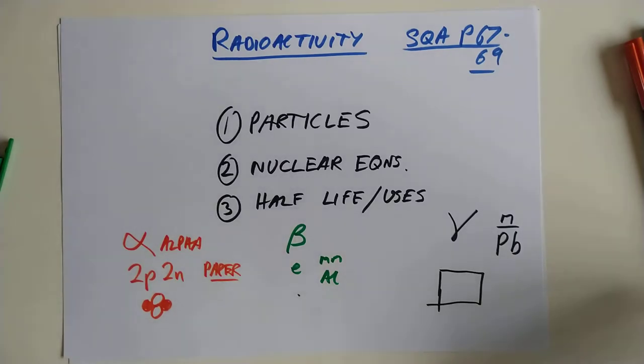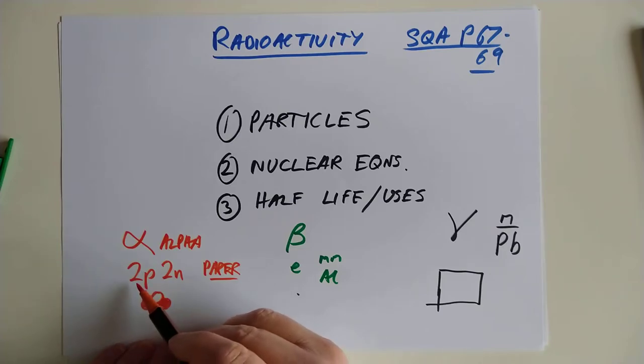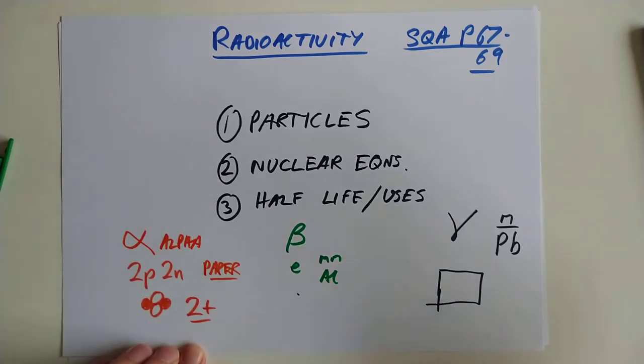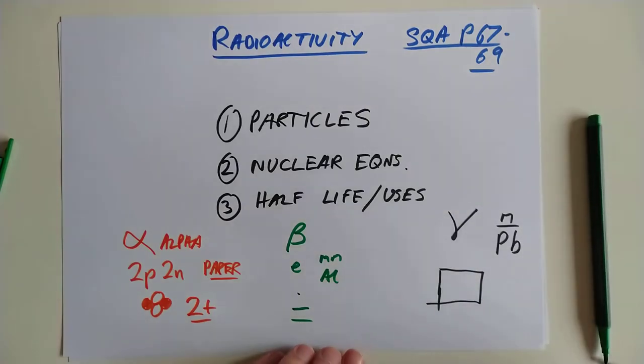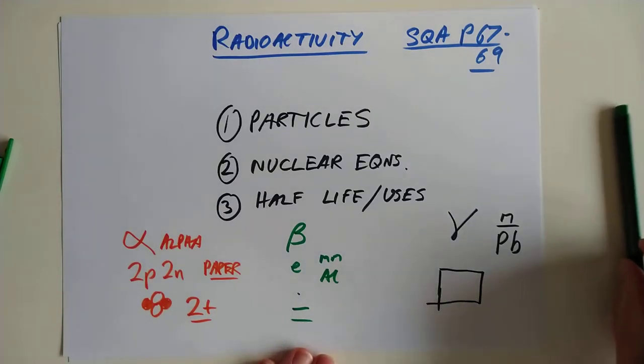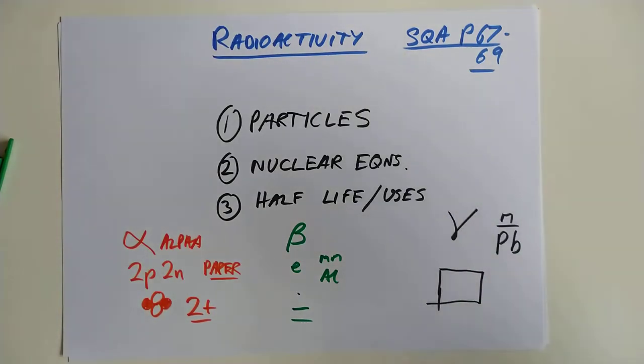You're also required to know the charge on these. The charge on an alpha particle, of course, two positives and two neutrals, means this is a two plus charge. The beta, because it's an electron, has got a negative charge. And gamma has got no charge, of course, because it's not really a thing. It's just a form of energy.